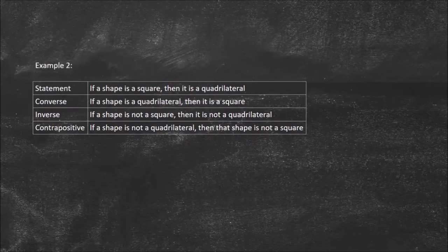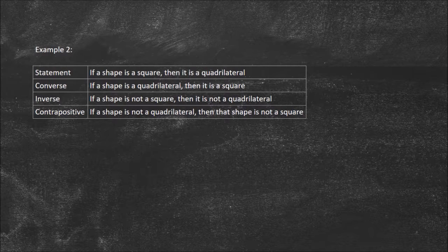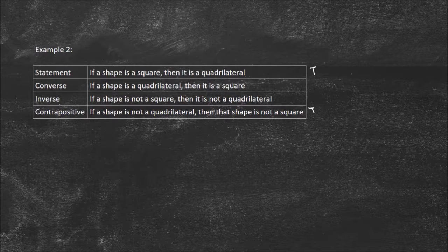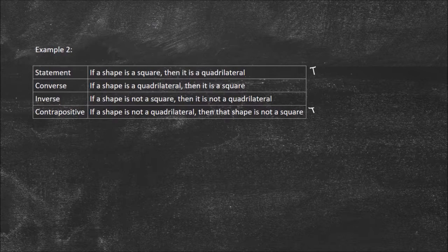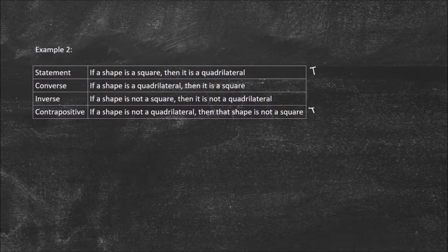Now let's look at one more example. Our statement is: if a shape is a square, then it is a quadrilateral. A square has four equal sides and right angles, so it is indeed a quadrilateral — that's true. That implies the contrapositive is also true. Now the converse: if a shape is a quadrilateral, then it is a square. This is asking whether all quadrilaterals are squares. The answer is no — you could have a rectangle, a rhombus, or a parallelogram. Those are all quadrilaterals but they are not squares. So the converse is false.